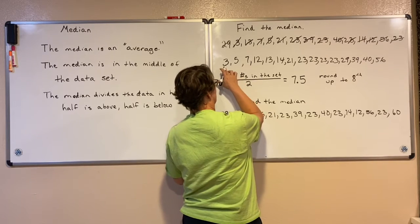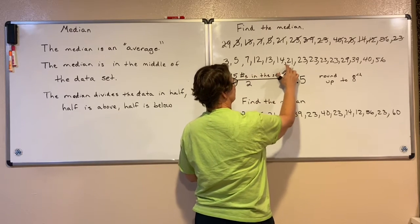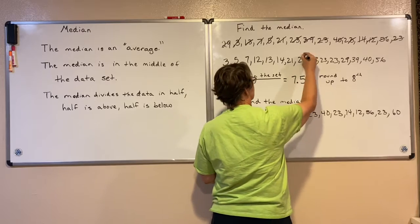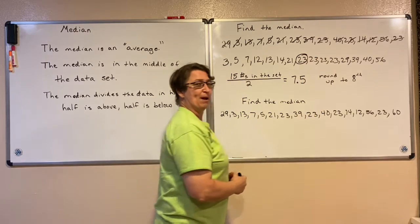It's going to be right in the middle. Counting 1, 2, 3, 4, 5, 6, 7, 8 — that should be my median.